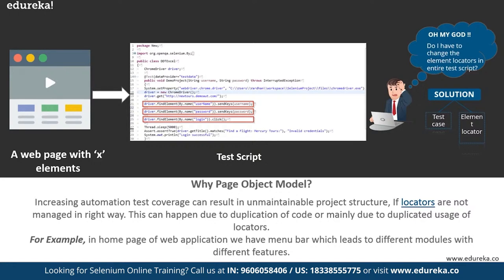The solution page object model gives you is that it writes element locators in one separate class file and the test case file is written in another class file. That is the main motto of page object model — to help you update the code efficiently, which increases the efficiency of the test automation framework.